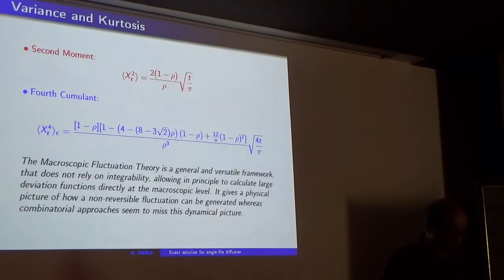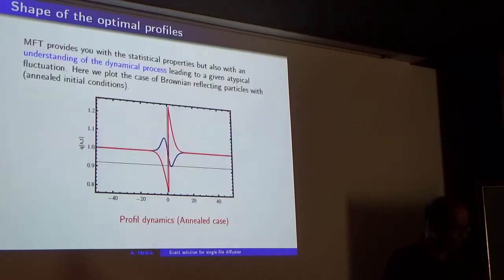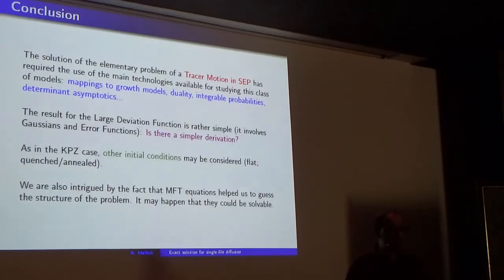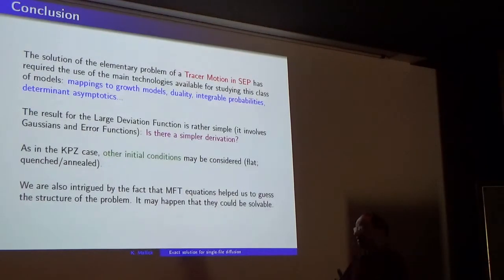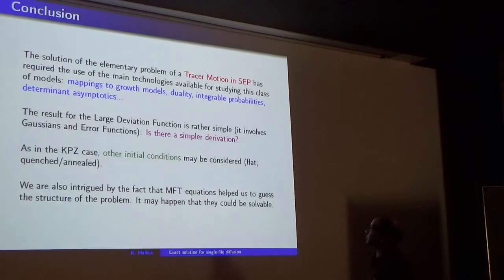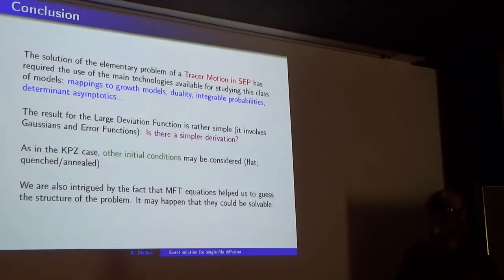The last thing I want to emphasize is that the MFT formula is in fact the same as the one I gave you using the Bethe Ansatz — the exact solution. This is a check that the physicists' approach using fluctuating hydrodynamics is really relevant, even for precise observables like the position of a single particle and its fluctuations. MFT was even helpful at the heuristic level to get the structure of the general formula. To conclude: integrability methods can answer relevant questions in non-equilibrium statistical mechanics. The result for the large deviation function is rather simple, and we may wonder if there is some simpler derivation. There may be some classical integrability hidden in MFT that we have not been able to track down yet. Thank you very much.